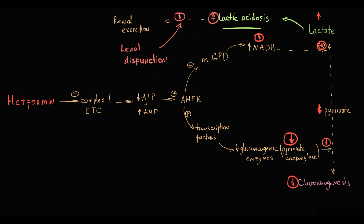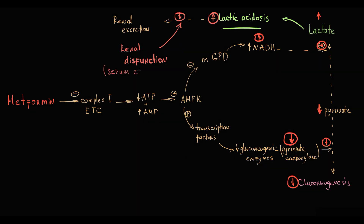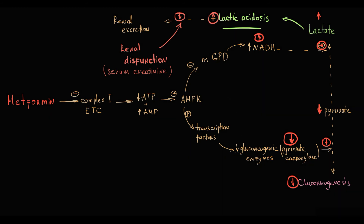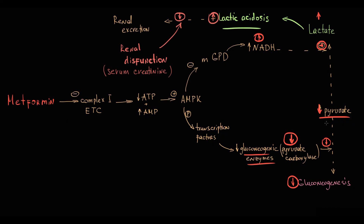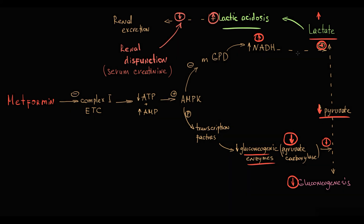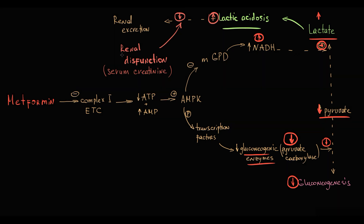For this reason, before initiating metformin therapy, we should assess serum creatinine levels to evaluate glomerular filtration function. In summary, metformin inhibits gluconeogenic enzyme activity, decreases the availability of substrates for gluconeogenesis, and simultaneously increases lactic acid production — which can be aggravated by renal dysfunction.